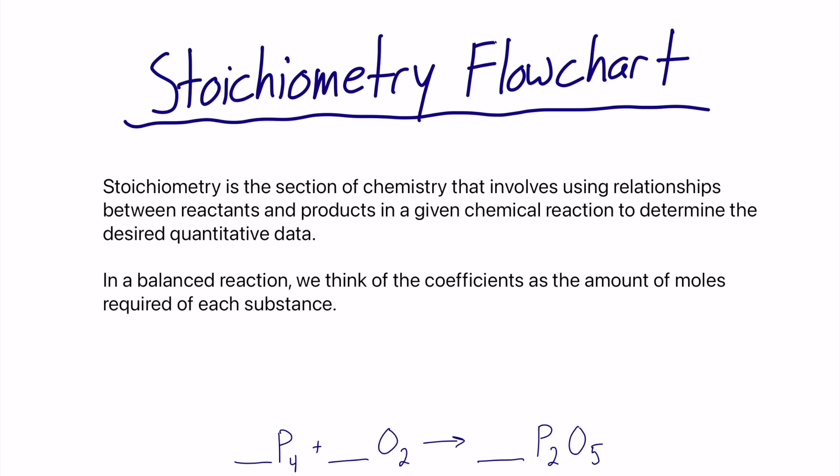We also have an example using the flowchart as well as balancing equations. Stoichiometry is the section of chemistry that involves using relationships between reactants and products in a given chemical reaction to determine the desired quantitative data. By quantitative data, I mean the number of particles, the mass, or possibly the volume.